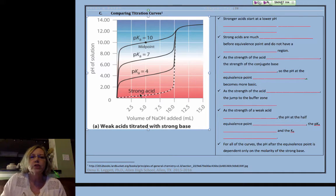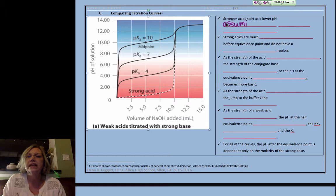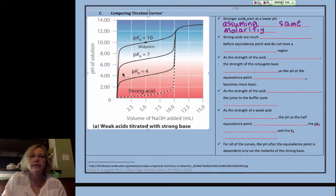Stronger acids. So this shows a strong acid. This is the weakest of the acids. Strong acids start at a lower pH, but assuming same molarity, you have to be a little careful because that starting point depends on molarity and strength. So they are going to start at a lower pH if you assume they are at the same molarity.